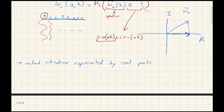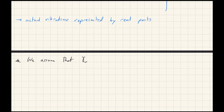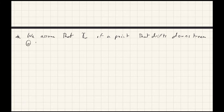We also need to make use of another assumption: we assume that the wake moves with the free stream velocity. So we assume that γ_w of some point in the wake that drifts downstream at velocity U is constant.